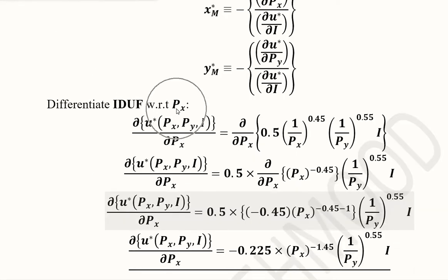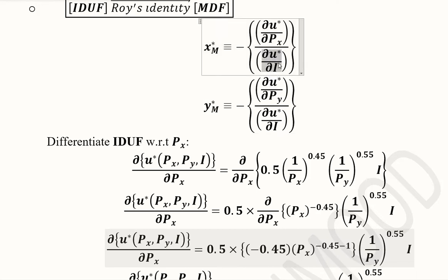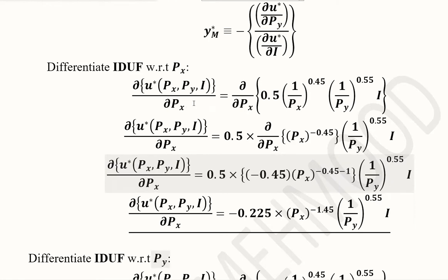We now solve for the three partial derivatives we need. The first is with respect to Px, the second with respect to Py, and the third with respect to I. These three partial derivatives are required to find the two Marshallian demand functions. The fourth derivative is the same as the second because the denominator in the formula is the same, so only three need to be computed.